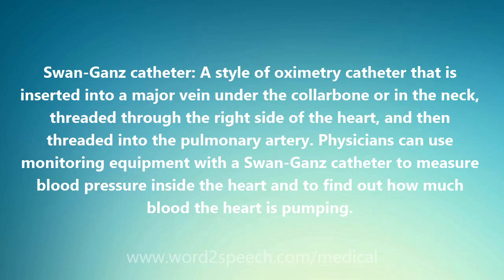Swan-Ganz catheter: a style of oximetry catheter that is inserted into a major vein under the collarbone or in the neck, threaded through the right side of the heart, and then threaded into the pulmonary artery. Physicians can use monitoring equipment with a Swan-Ganz catheter to measure blood pressure inside the heart and to find out how much blood the heart is pumping.